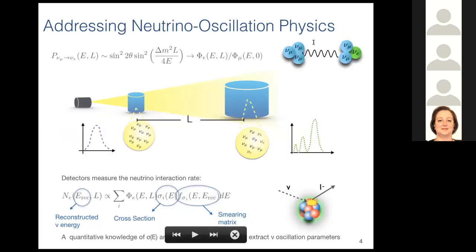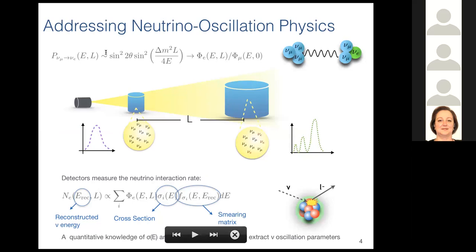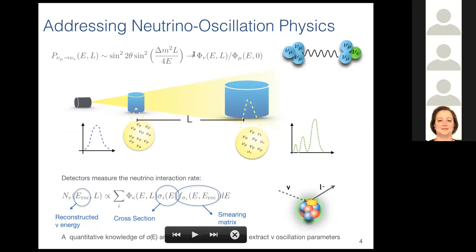We start producing our muon neutrino beam and let it propagate. We want to compute the probability that the muon neutrino oscillated into an electron neutrino. This is proportional to an expression that depends on the distance traveled by the beam, its energy, and the oscillation parameters — specifically the mixing angle and the squared mass difference. Experimentally, these probabilities are obtained as the ratio of the oscillated electron neutrino flux divided by the initial muon neutrino flux. That's a schematic picture of how this experiment works.